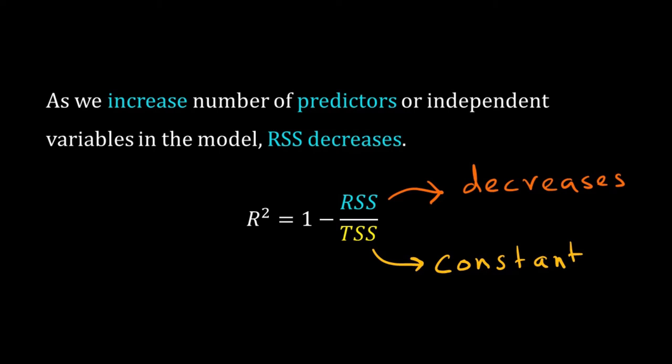Number of predictors has no effect on TSS. So as RSS drops, the R squared value increases. That indicates that the model is getting better. But that is a trap. We are overfitting.